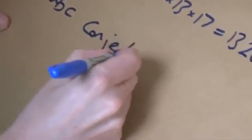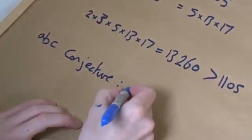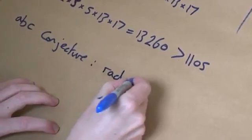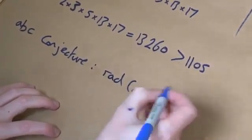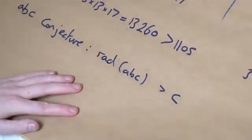The ABC conjecture is the radical, which I told you how to work that out. That's this. The radical of ABC is bigger than the right-hand side.